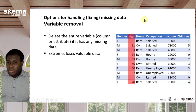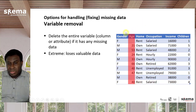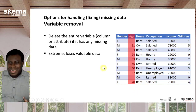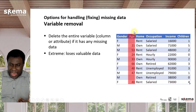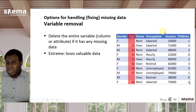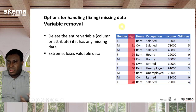Another option is to get rid of the entire variable that has missing data — variable removal. This is generally an extreme, last-resort solution because attributes are much more valuable than specific rows. When you lose a variable or attribute, you're really losing important information, so only delete an entire column if you have no other alternative.